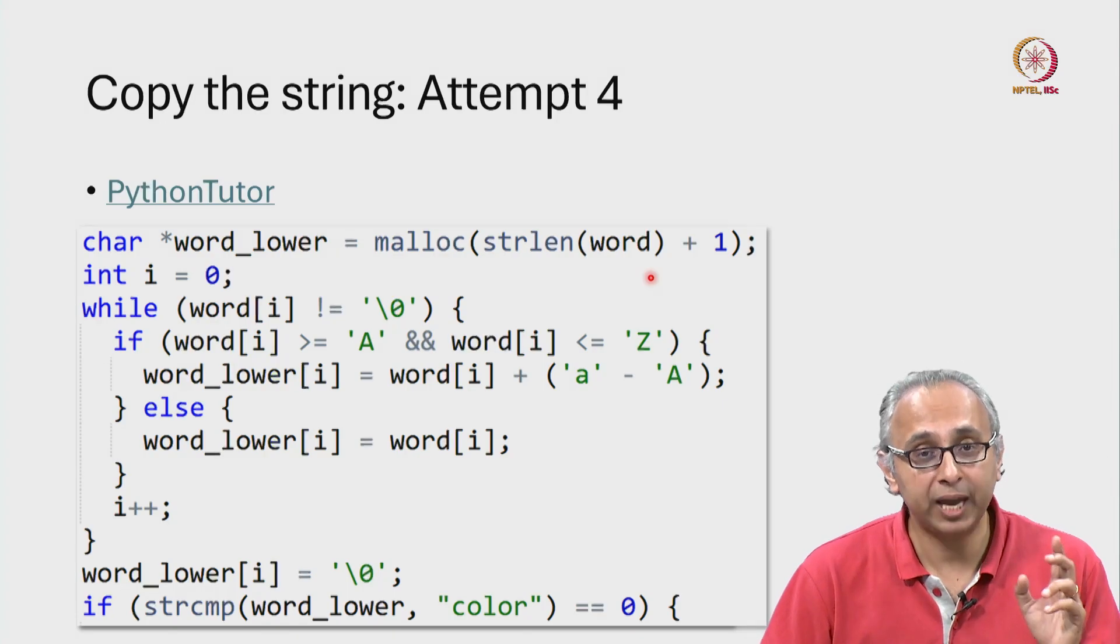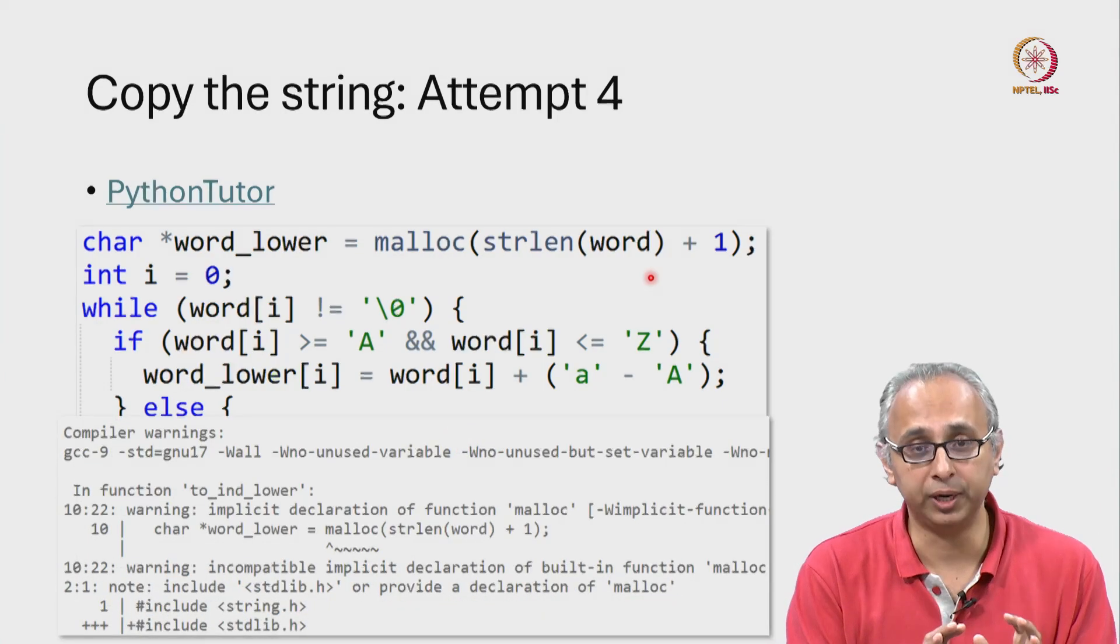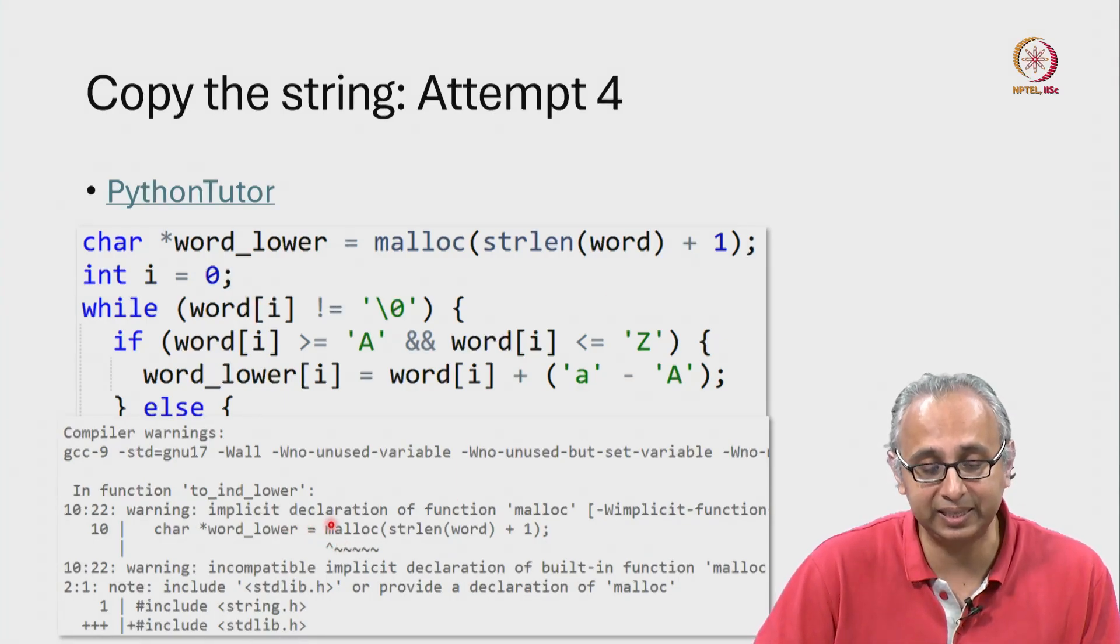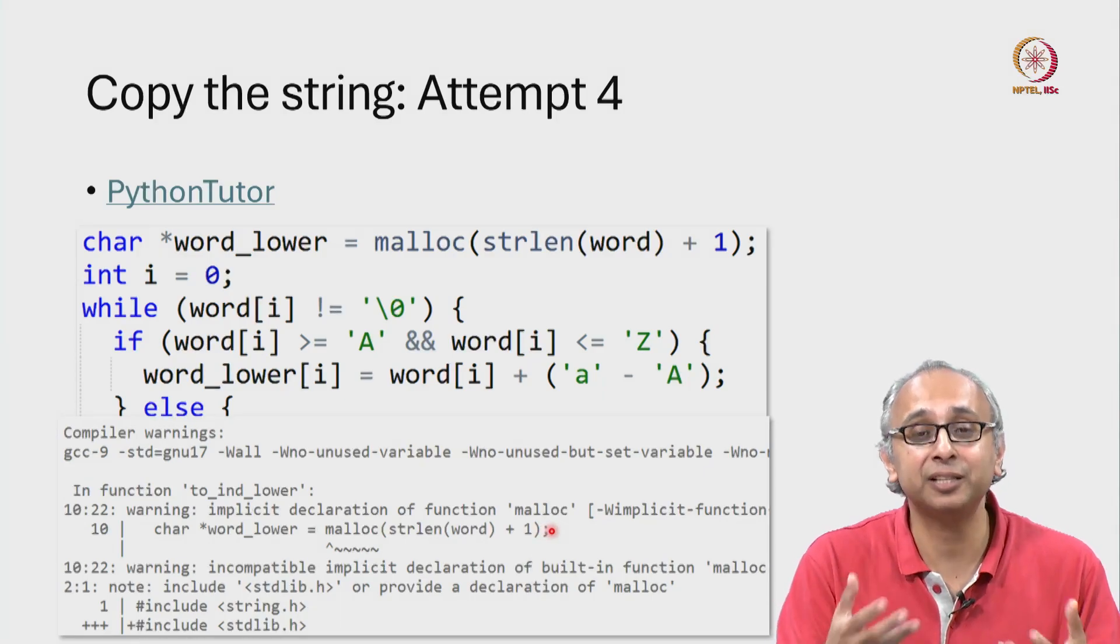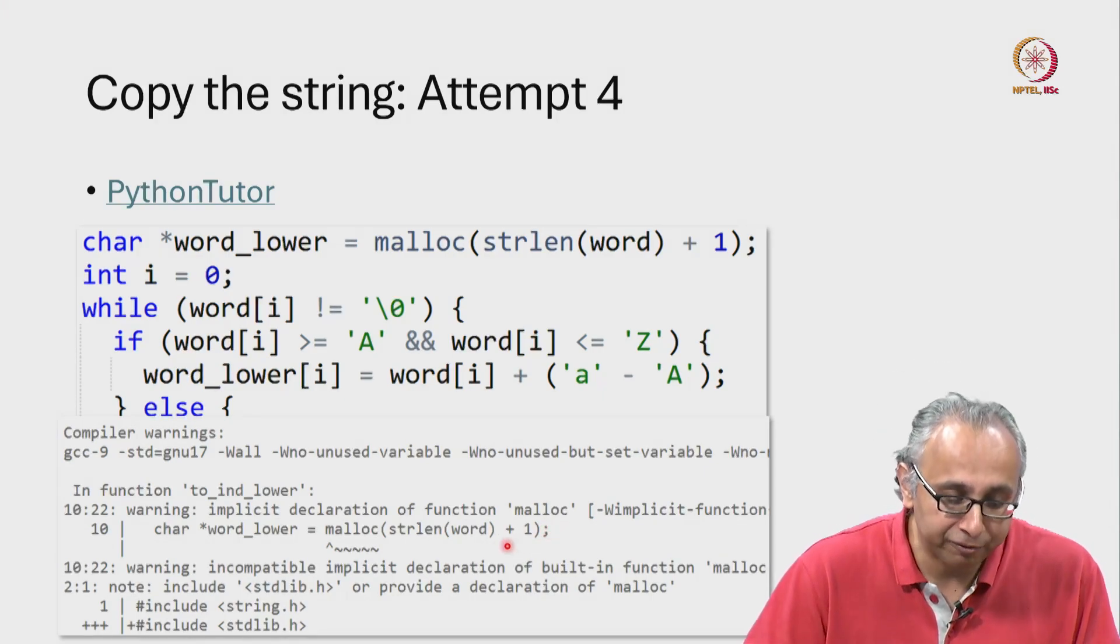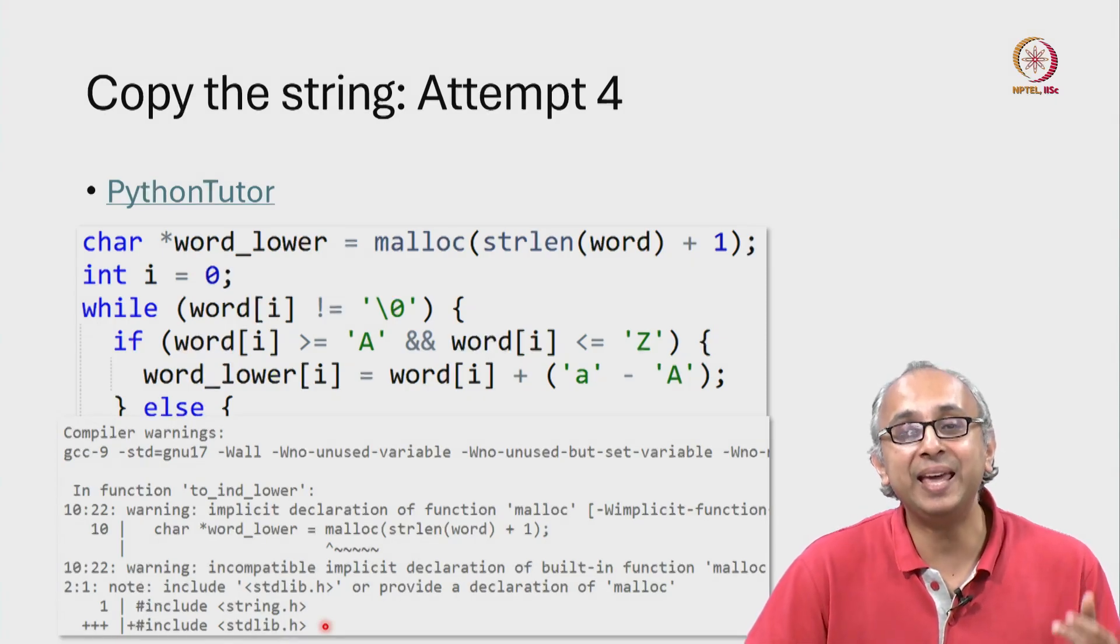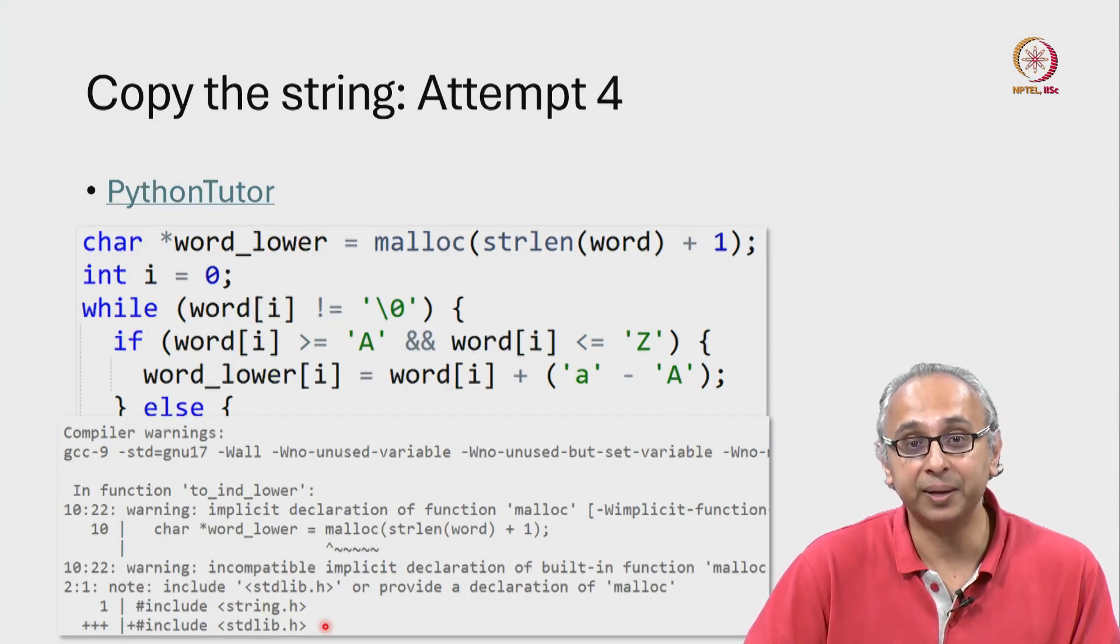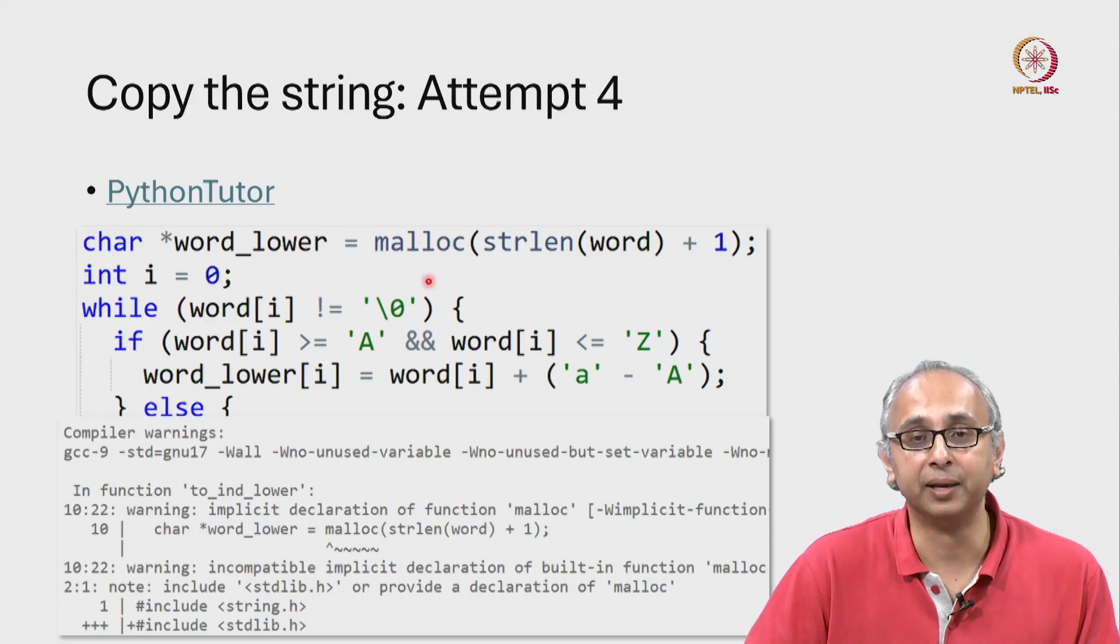Now this code if we actually try and run it will produce a warning. The warning is that at this point we are implicitly declaring this function malloc. It's not a built-in function in C, you have to hash include another header file. This one is called stdlib which is standard library. So in the standard library you have a helper function called malloc which you should import.